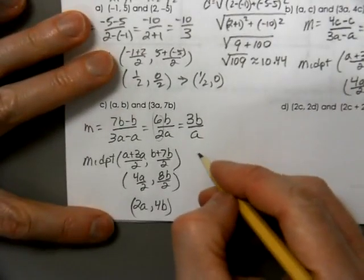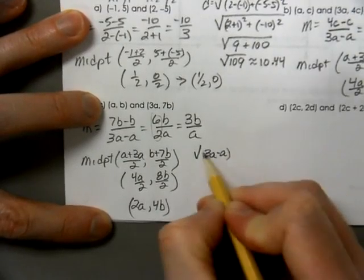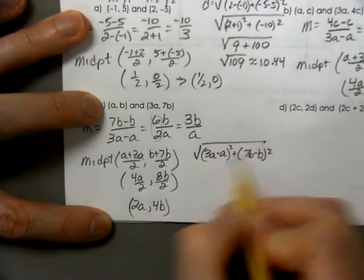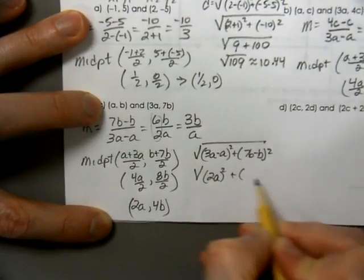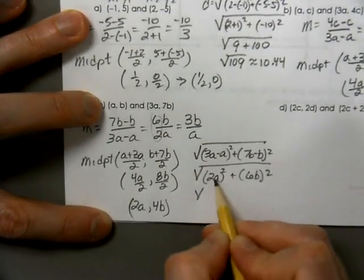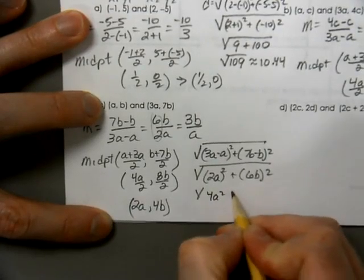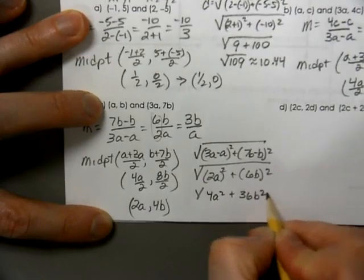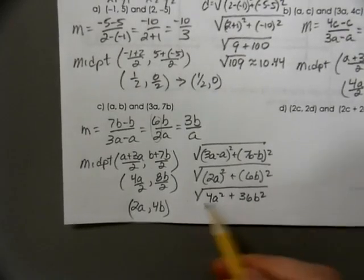Our distance would be 3a minus a and 7b minus b. Leaves us with 2a being squared and 6b being squared. When you square 2a, that's 2a times 2a. 2 and 2 is 4. a and a is a squared. 6 and 6 is 36. b and b is b squared. But there's nothing we can reduce with that. Because of the plus, we cannot reduce that.